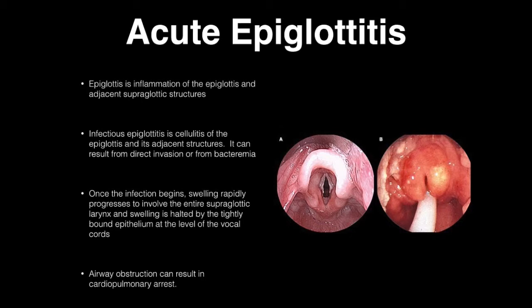Acute epiglottitis is the next topic — it's a curious pathology. It's inflammation of the epiglottis and the adjacent subglottic structures. Infectious epiglottitis is a cellulitis of the epiglottis and adjacent structures resulting from invasion or bacteremia. Once infection begins, swelling rapidly progresses involving the entire supraglottic larynx, halted by tightly bound epithelium at the level of the vocal cords. Airway obstruction can result in cardiopulmonary arrest.